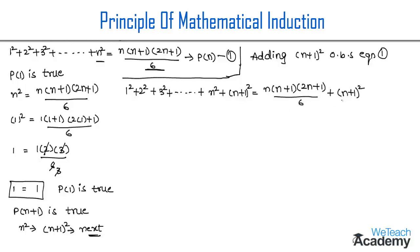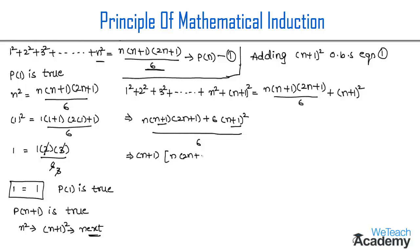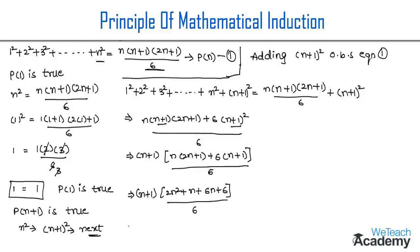Now let us simplify the RHS. Taking LCM as 6, the numerator becomes n(n+1)(2n+1) + 6(n+1)². Taking (n+1) as a common factor gives (n+1)[n(2n+1) + 6(n+1)] / 6. Expanding, n(2n+1) gives 2n² + n, and 6(n+1) gives 6n + 6, so we have (n+1)(2n² + 7n + 6) / 6.